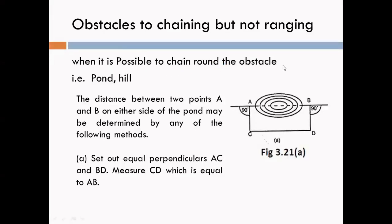When it is possible to chain around the obstacle — see in figure — consider two points A and B on the ground. A is our starting point, B is our ending point, and AB is our survey line. In between A and B there are some obstacles; for example, a pond is here. So chaining is not possible.